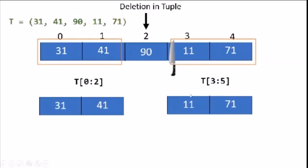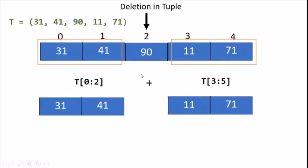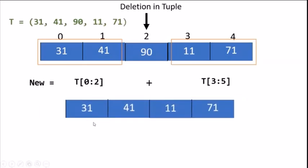Now we will add the two parts with a plus symbol and store it in the new object. So the new tuple will become our new tuple. After getting the new values, we will get new index numbers.